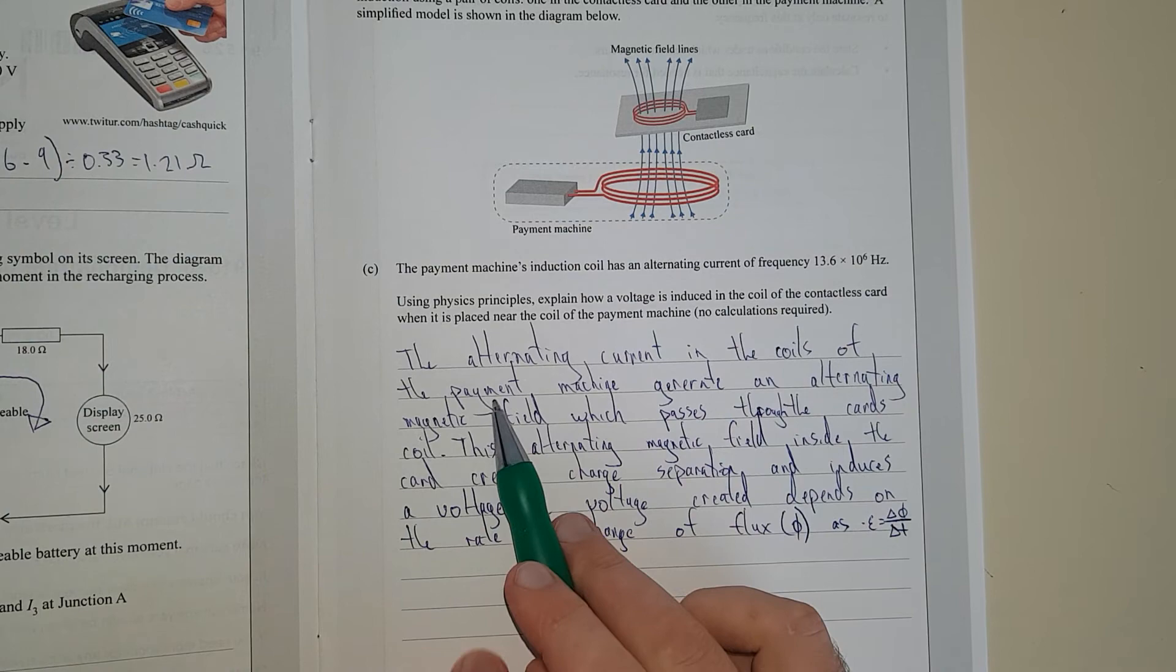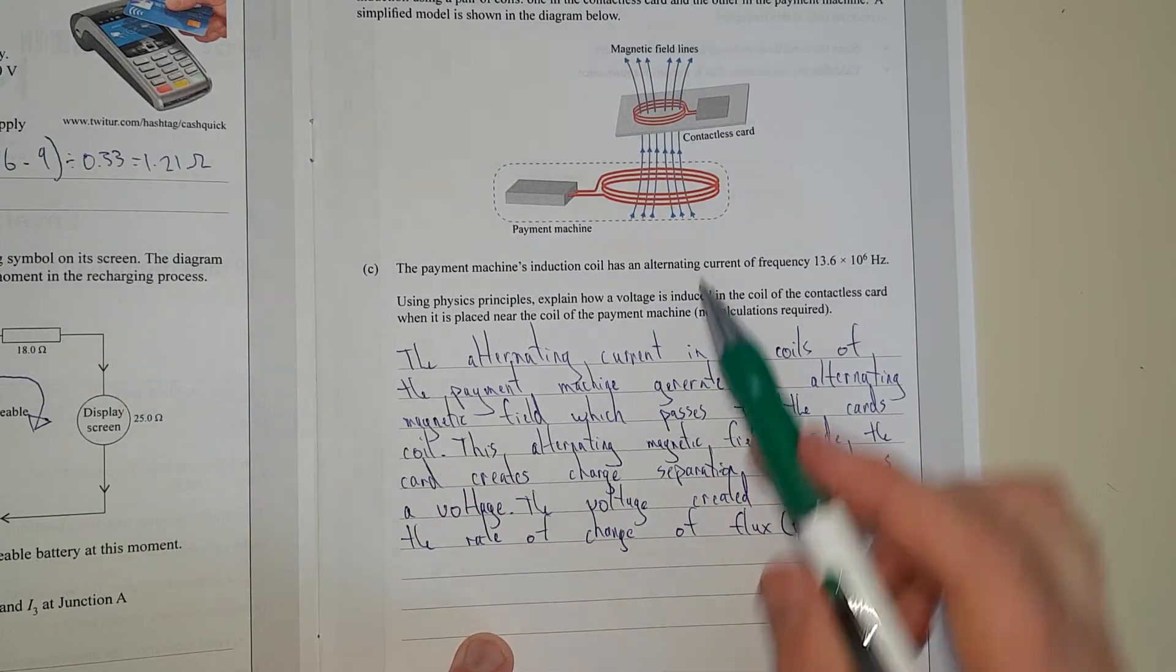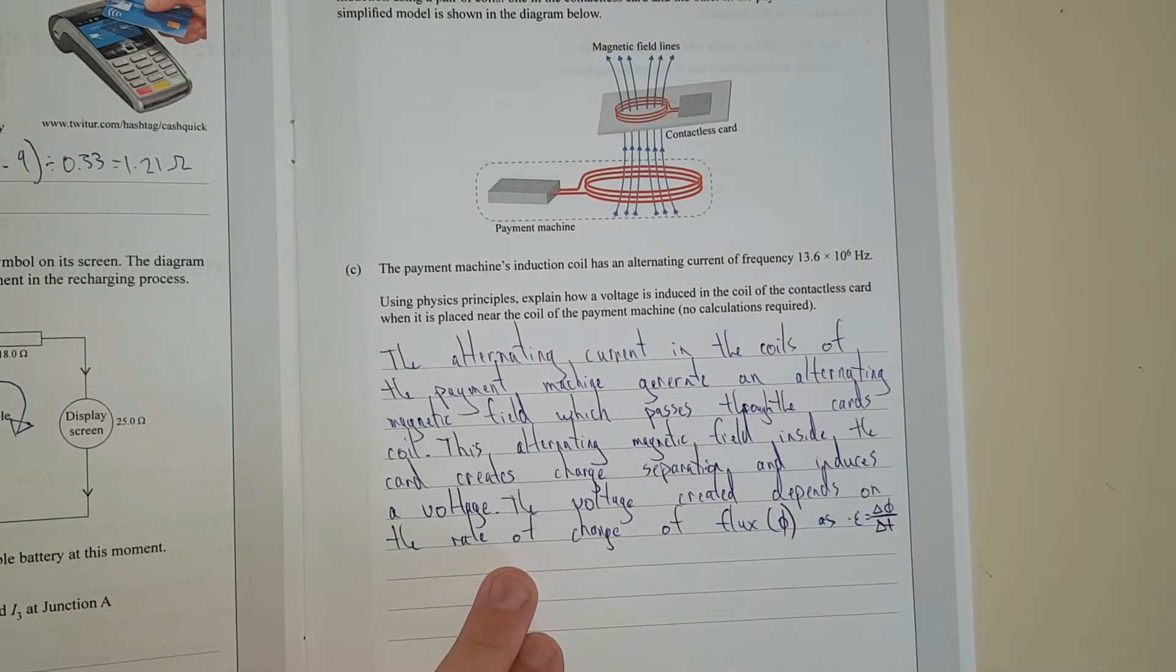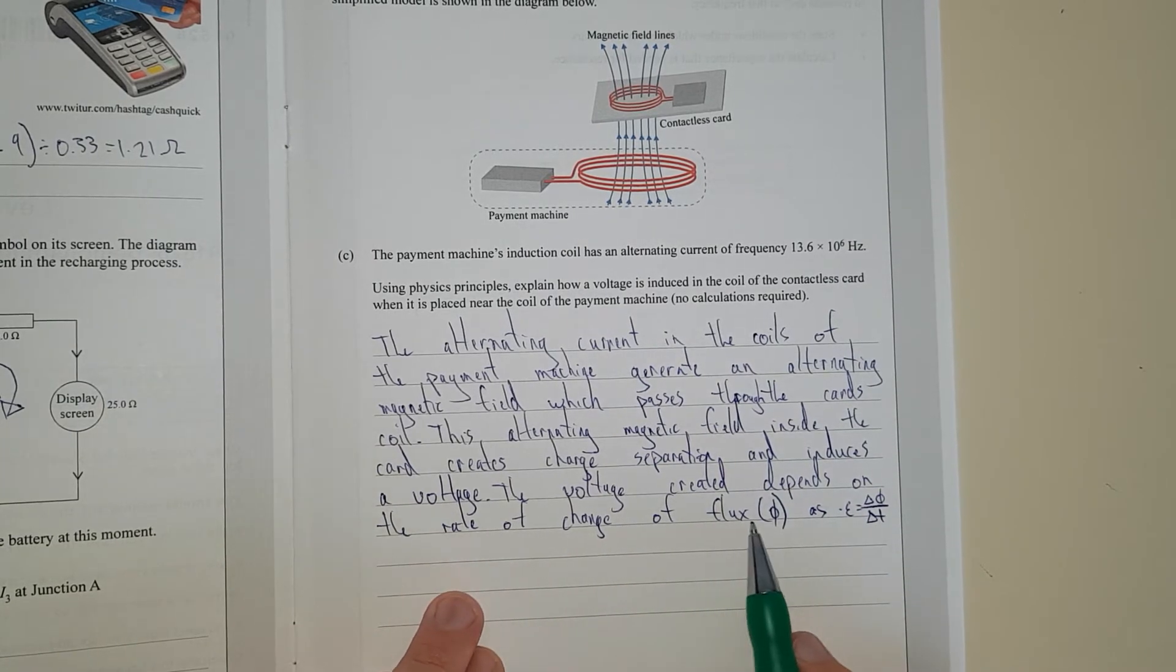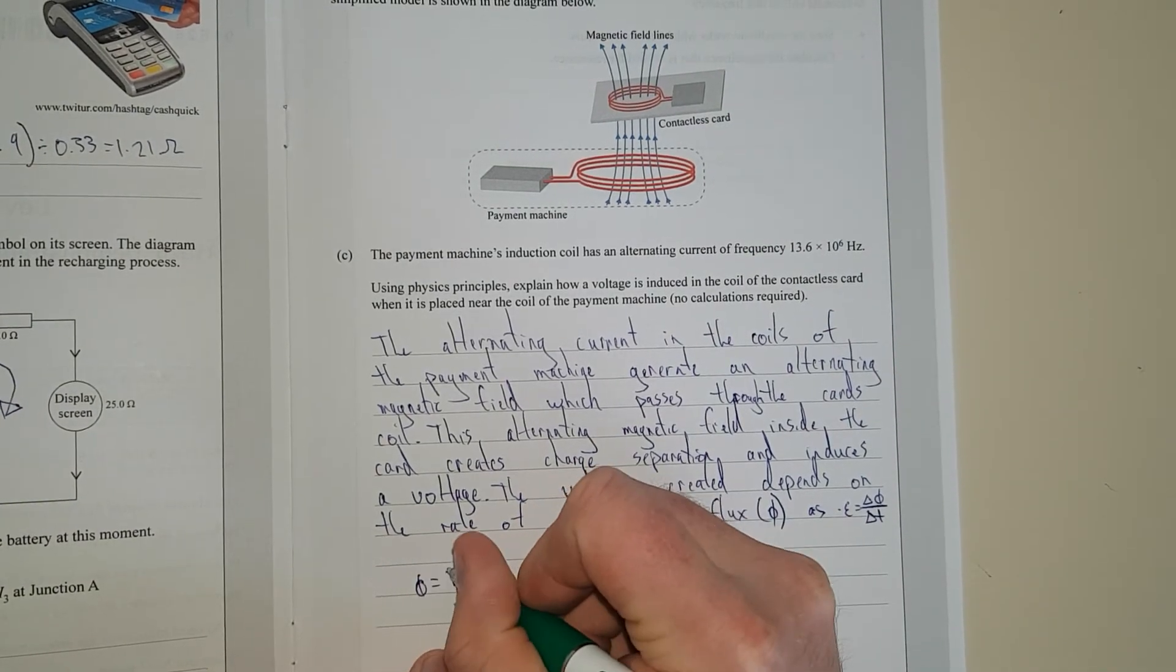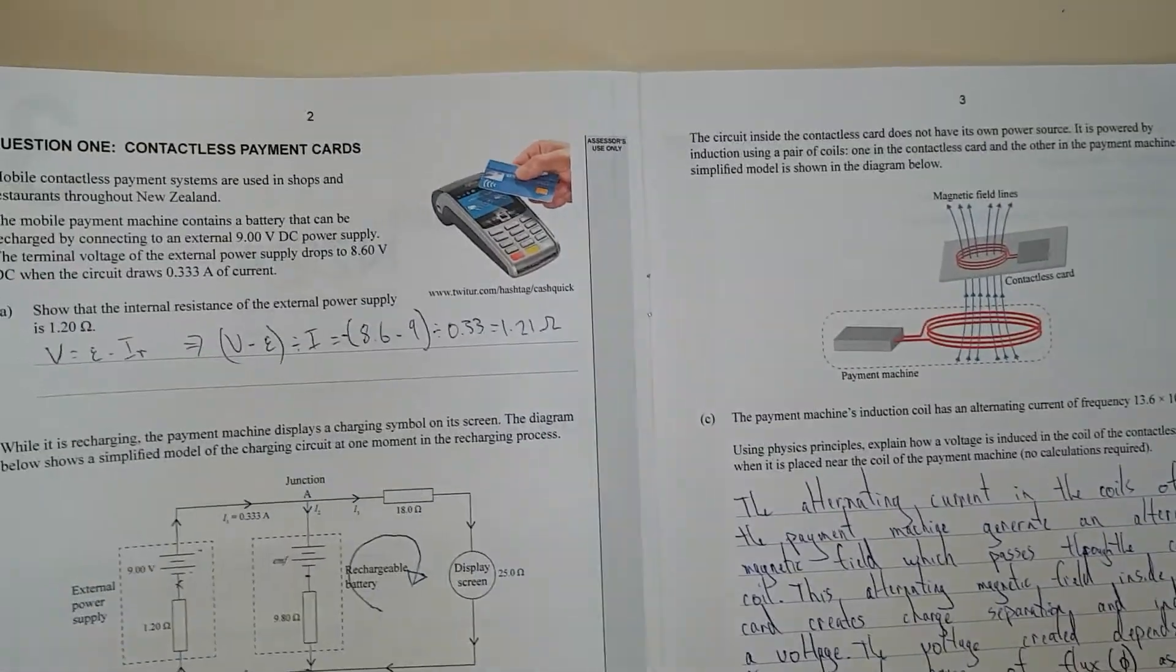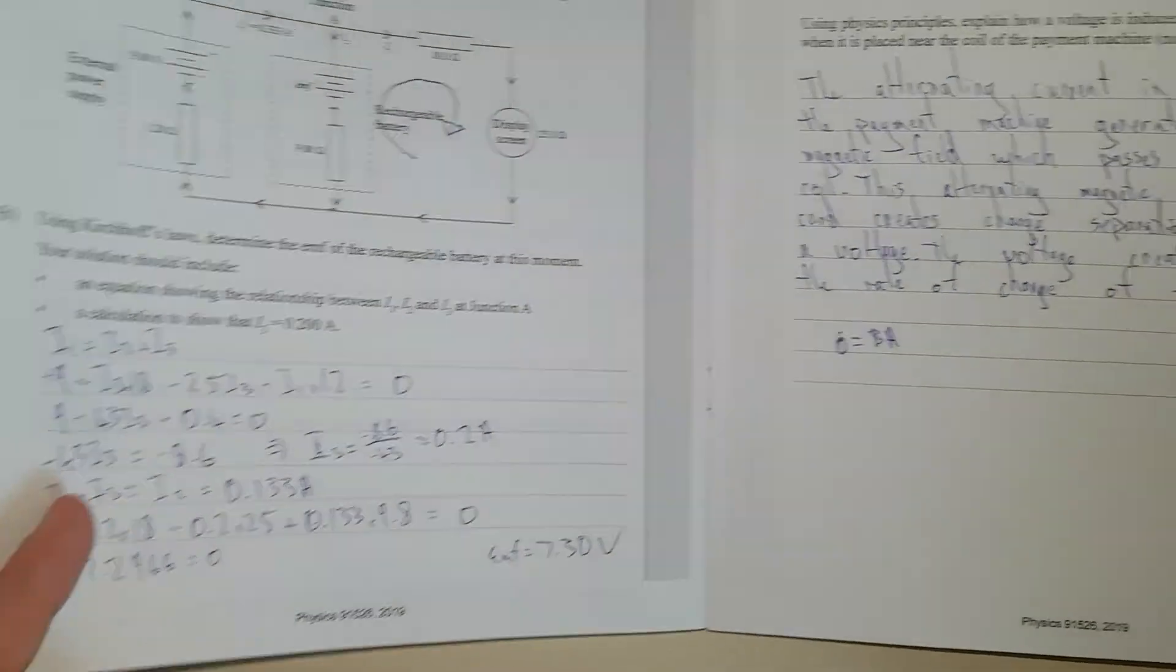So I've said the alternating current in the coils of the payment machine, this fella here, will generate an alternating magnetic field which passes through the card's coil. As you can see, there's magnetic field lines passing through the card's coil. This alternating magnetic field inside the card creates charge separation and induces a voltage. One thing I did forget to talk about is the size of the voltage. So the voltage created depends on the rate of change of flux. Flux is just how many field lines are in that area. The formula I'll just chuck in here is the magnetic field times the area. It's just a more quantitative way to talk about magnetic fields. And I'll just chuck the formula down.